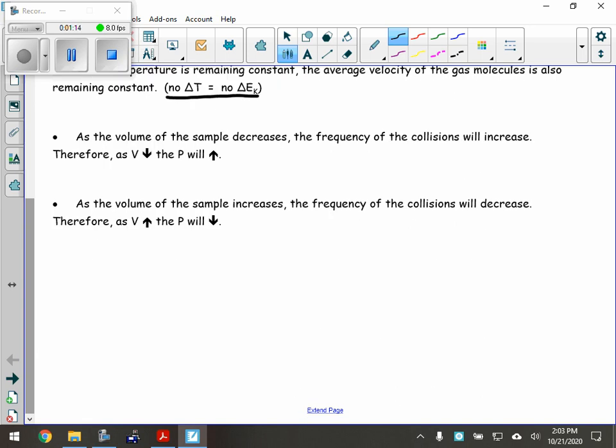Boyle's Law says this: if the volume goes down, by default, that means the pressure has to increase. If we want the pressure to decrease, we have to make the volume larger. So those are the two variables - pressure and volume. Temperature is going to remain the same. There is a relationship between pressure, volume, and temperature, and those are the three variables we're going to talk about today.